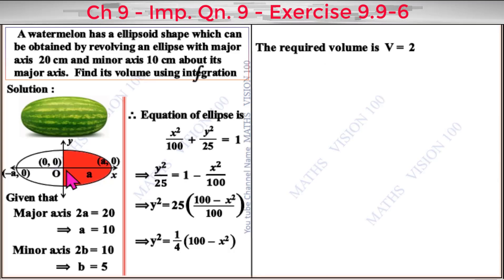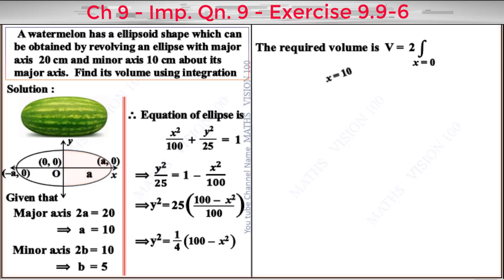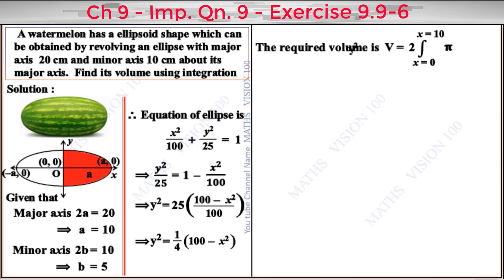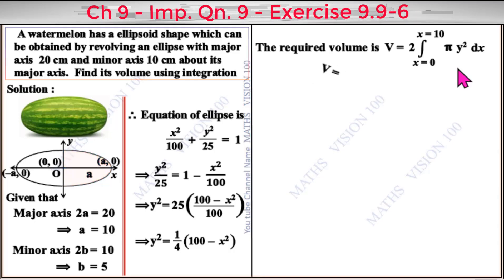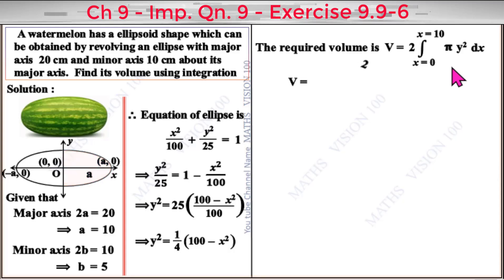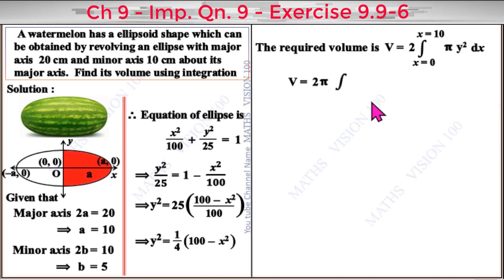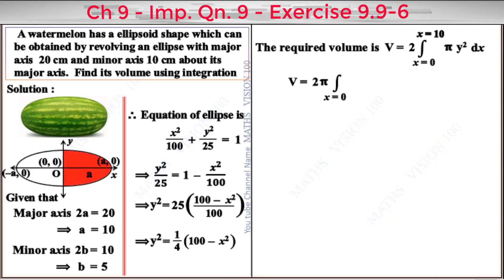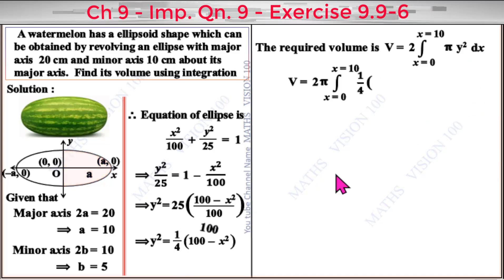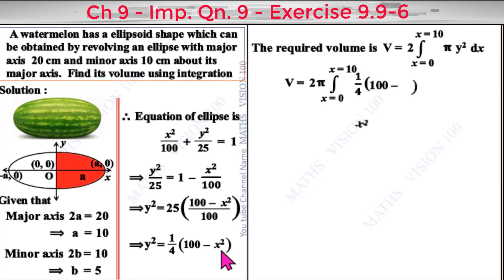Using symmetry, V = 2 times the integral from x = 0 to x = a = 10 of π y² dx. Substituting y², V = π∫₀¹⁰ (1/4)(100 − x²) dx.